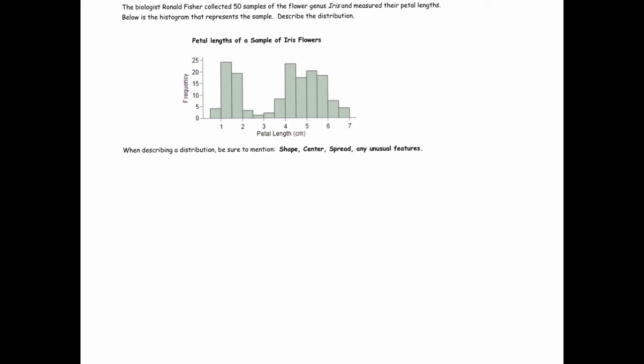Those are the shape, center, spread, and any unusual features, which would probably include an outlier or outliers. Here's our example: the biologist Ronald Fisher collected 50 samples of the flower iris and measured their petal lengths. Below is the histogram that represents the sample, and we're asked to describe the distribution.